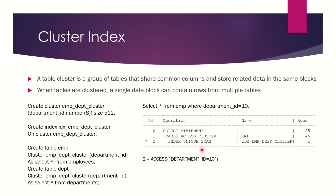In this case we were able to make use of the cluster index because the EMP table is created as part of the cluster and we already have a cluster index on the department_id column. Similarly, if you fire a query SELECT * FROM department WHERE department_id = 10, it will again make use of the same cluster index. That is the advantage of the cluster index — one index created on a shared column of multiple tables, applicable while accessing rows from all those specific tables.